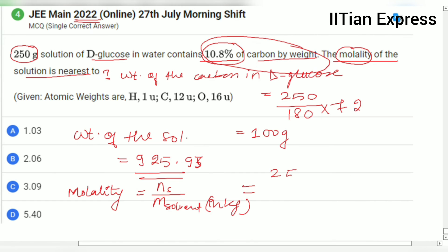Here what we are going to do: 250 divided by 180, this is the number of mol of solute, divided by 925.93 minus 250 and multiplied by thousand. When we are going to simplify it, we are going to get 2.06.